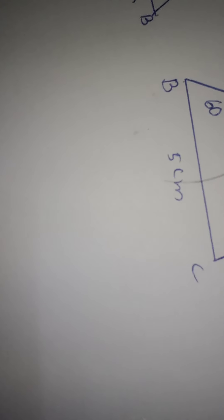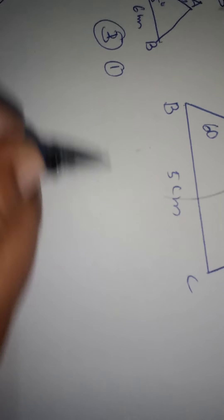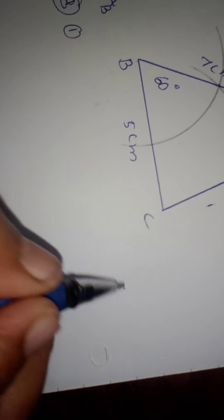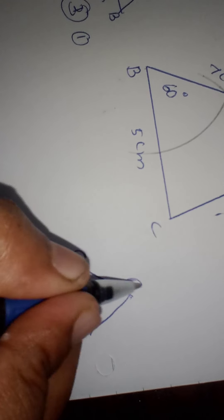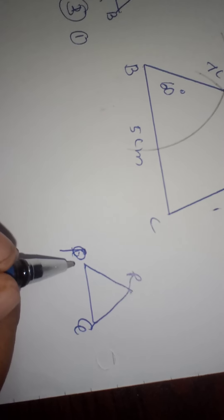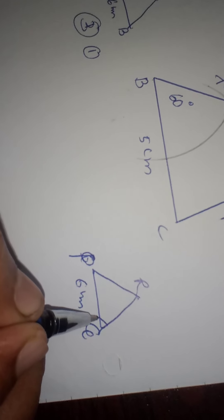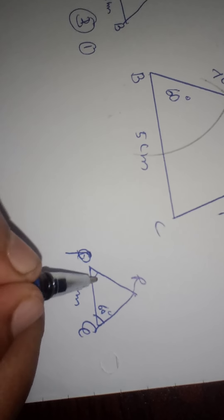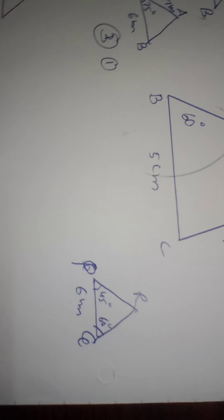Moving to the next set: construction of triangle PQR with one side and two angles given. This is the third set of questions. Draw the rough figure: PQR with angle at Q and angle at P. The base PQ is 6 cm, angle Q is 60 degrees, and angle P is 45 degrees.